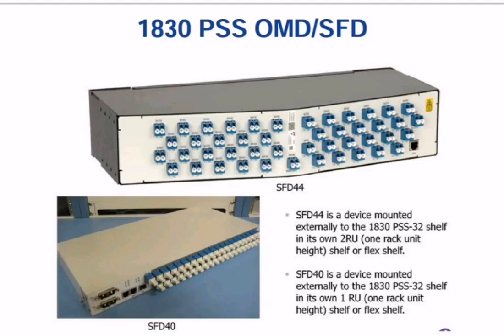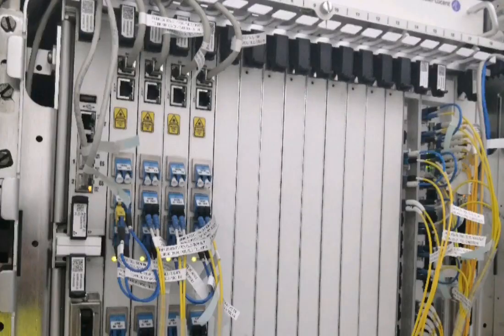The next part is the SFD, which is a device mounted externally to the 1830 PSS shelf in its own rack. We connect fiber optics to the SFD44. This is basically used for fiber optic add or drop multiplexers. From the EC equipment controller card, the fibers are directly connected to this SFD, and from there the fiber connects to our equipment, including the line and client cards.